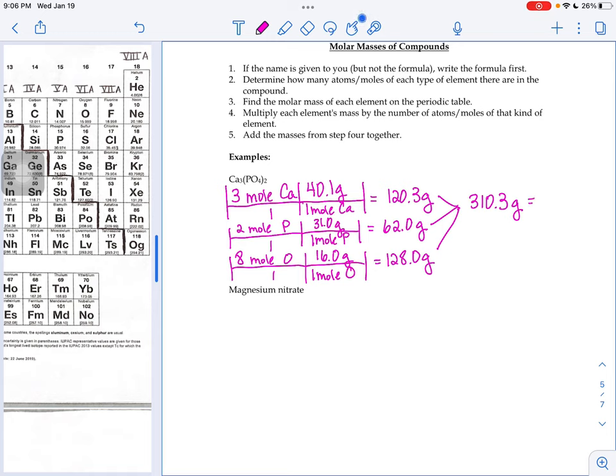We add those three components up and get the number 310.3 grams. That's what we call the molar mass of calcium phosphate. One mole's worth of calcium phosphate. If we had 6.02 times 10 to the 23rd formula units of calcium phosphate poured them on a balance, the mass would be 310.3.